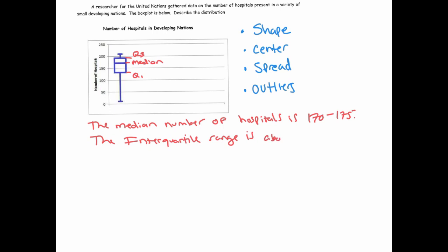The interquartile range is about, let's guess at these values, this looks like it might be 130 and that might be 190. So the distance is about 60 hospitals.